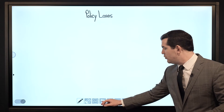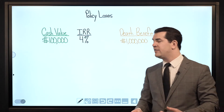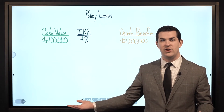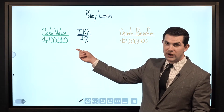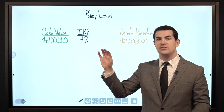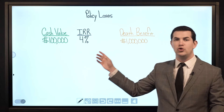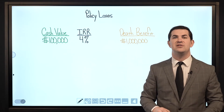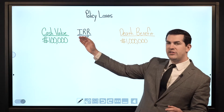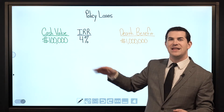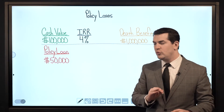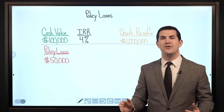When we look at policy loans, let's assume you have a high cash value life insurance policy with $100,000 in cash value, and your net internal rate of return — which is your net growth rate, not the dividend rate — is 4%. We'll also assume you have a death benefit of $1,000,000. If you don't do anything, the next year that cash value will appreciate to $104,000. We'll now assume you take a $50,000 policy loan.